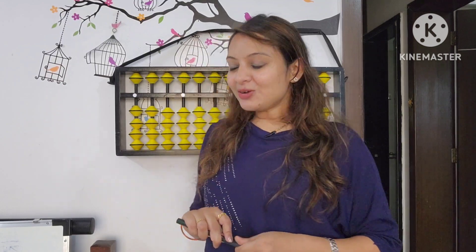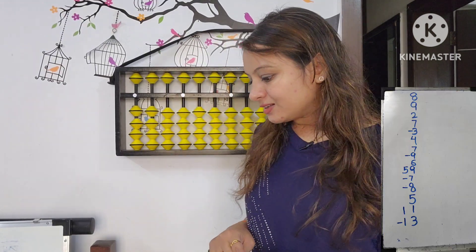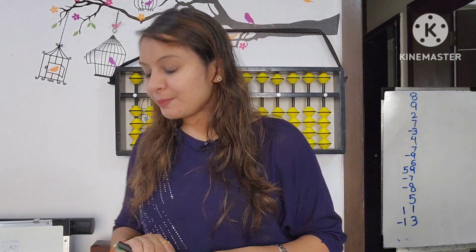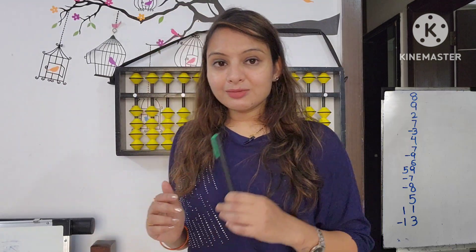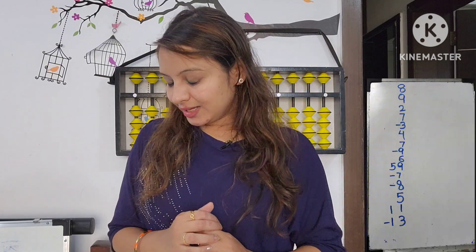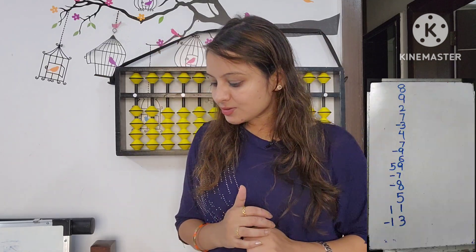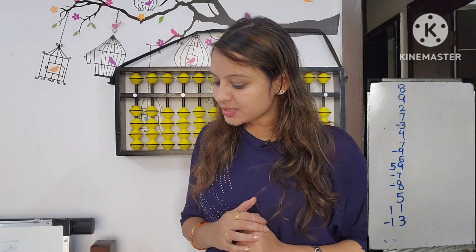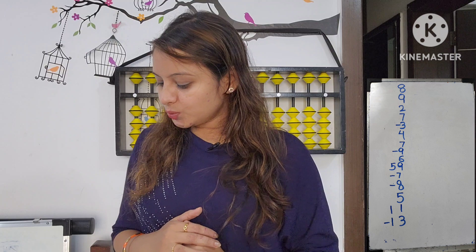Before starting on abacus, keep this in mind always: 'add' means add more, 'less' means subtract. The sum I've shared on screen is: 8, 9, 2, 7, less 3, 4, 7, less 9, 6, 59, less 7, less 8, 5, 11, less 13.